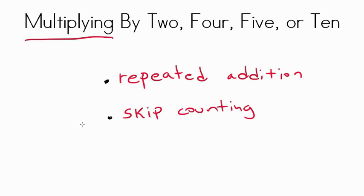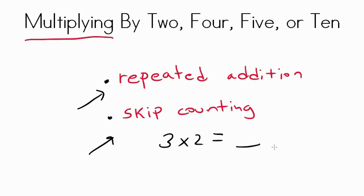Nice work. To review: with multiplication by 2s, 4s, 5s, or 10s, you can use repeated addition to help you out. You're multiplying the same amount over and over again, and you can use skip counting to help you. For instance, 3 times 2 — to find that product, all you're doing is 2 plus 2 plus 2 for a product of 6. Keep practicing your skip counting by 2s, 4s, 5s, and 10s, and you'll be a master at multiplication in no time. Great job, and I can't wait to talk to you more about math soon.